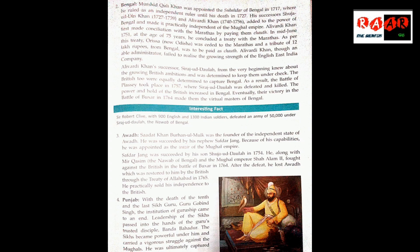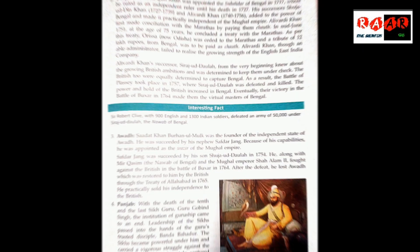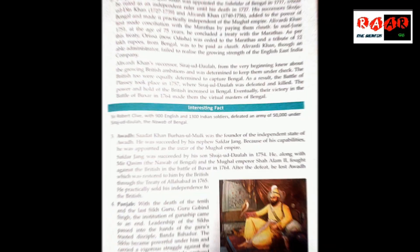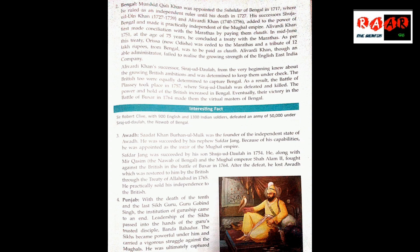Aliwardi Khan was a very able administrative ruler, but he did not foresee that the East India Company was secretly growing in power. His successor felt British ambitions were not good for their area and started opposing British interests. Eventually, the British built Fort William in Bengal without the Nawab's permission, which became the main reason for the Battle of Plassey.